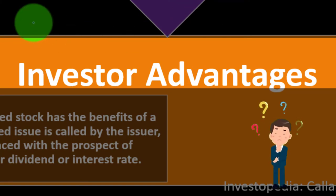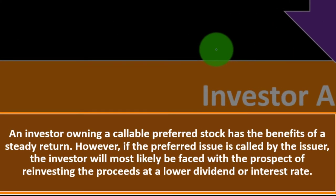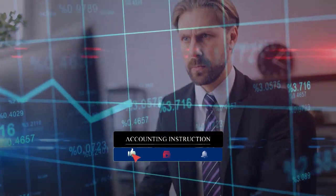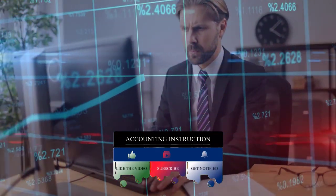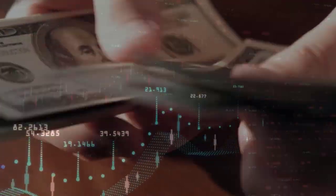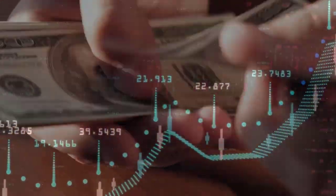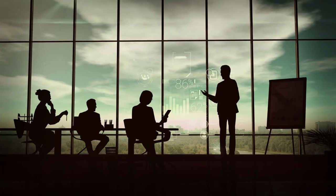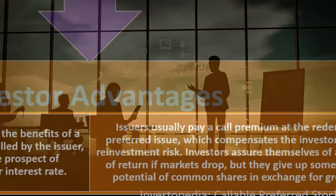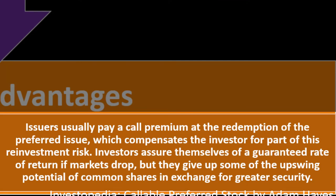Now, investor advantages: an investor owning callable preferred stock has the benefit of a steady return. However, if the preferred issue is called by the issuer, the investor will most likely face the prospect of reinvesting the proceeds at a lower dividend or interest rate. The preferred stock will be called at a time that is favorable for the issuer — meaning the investor will likely not be able to reinvest and get the same return, since interest rates will have changed. Issuers usually pay a call premium at redemption to compensate the investor for part of this reinvestment risk.